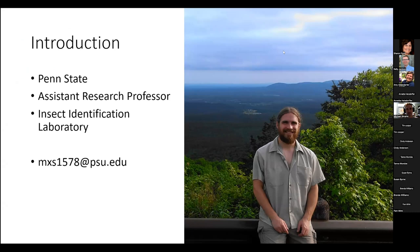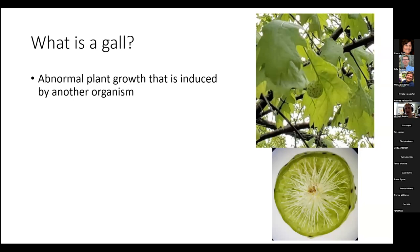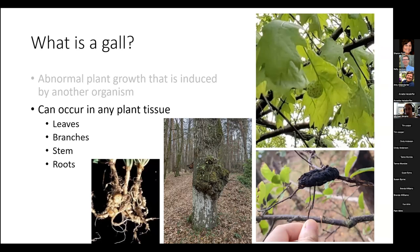So what exactly is a gall? A gall is any kind of abnormal plant growth that is induced by another organism that is not the plant. That's a pretty broad definition. Galls can occur on any sort of plant tissue — on the leaves, on the branches, on the stems, on the roots — anywhere on the plant. If it's an abnormal growth caused by something else, it can be a gall.